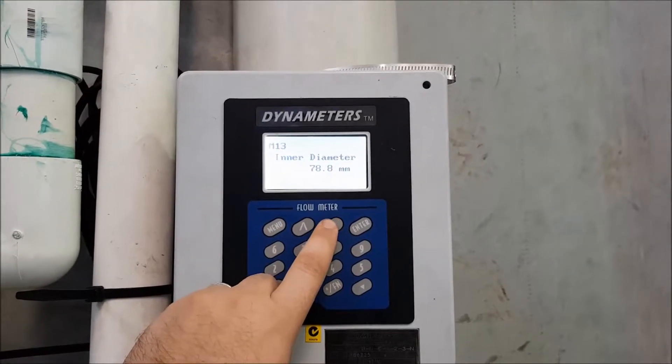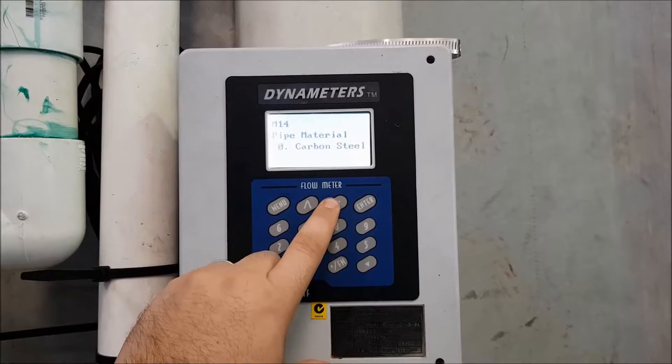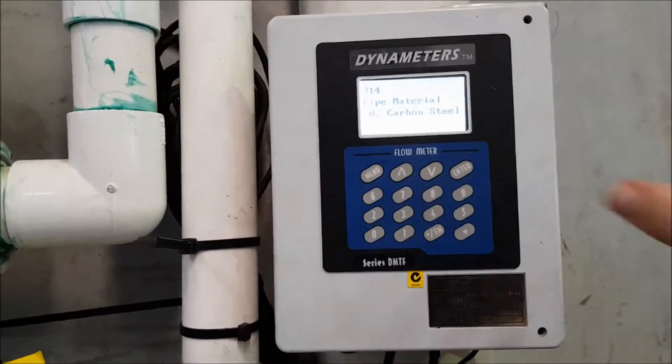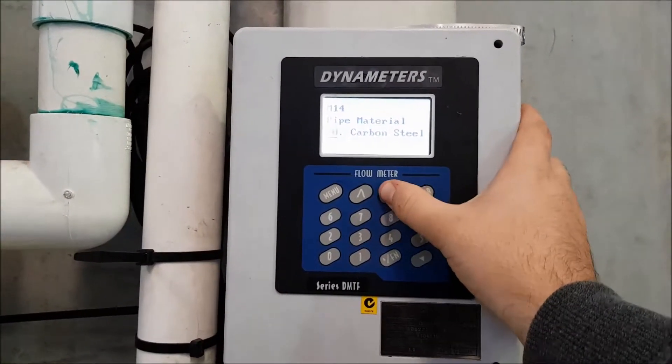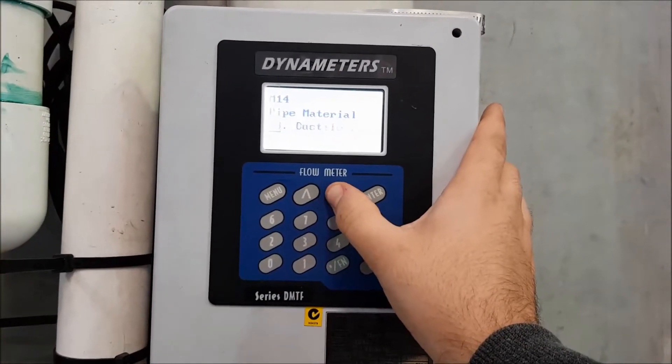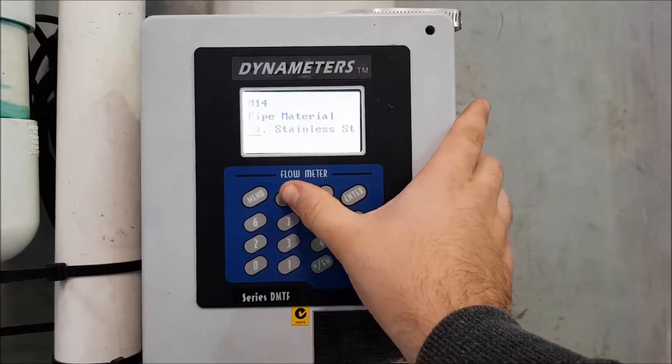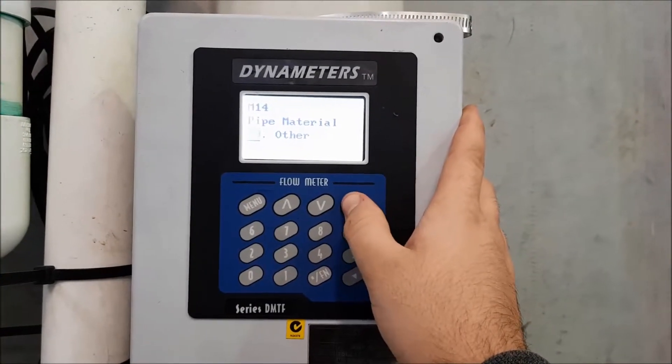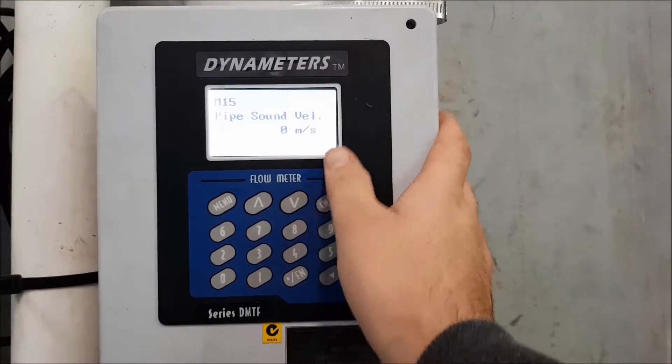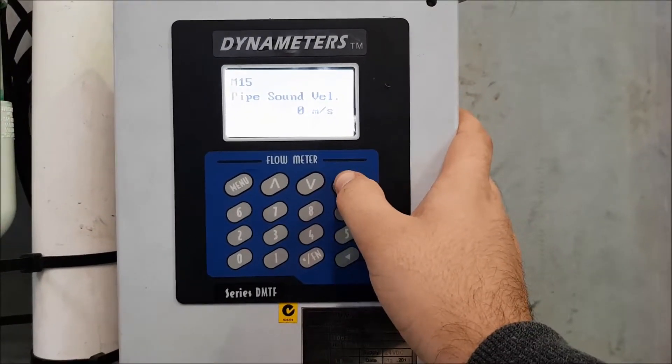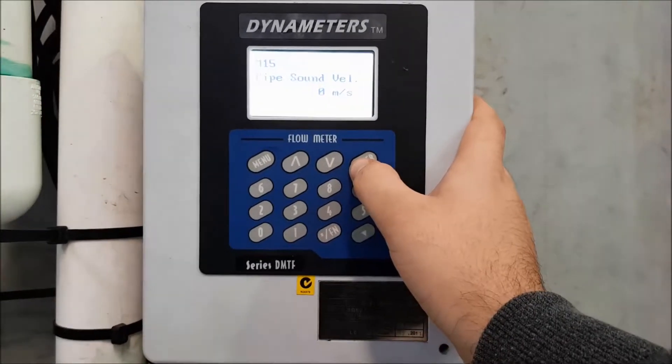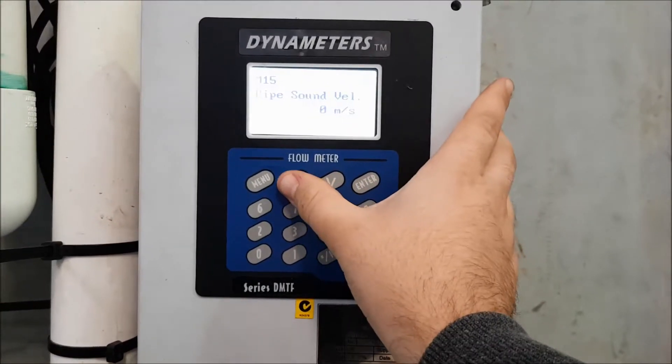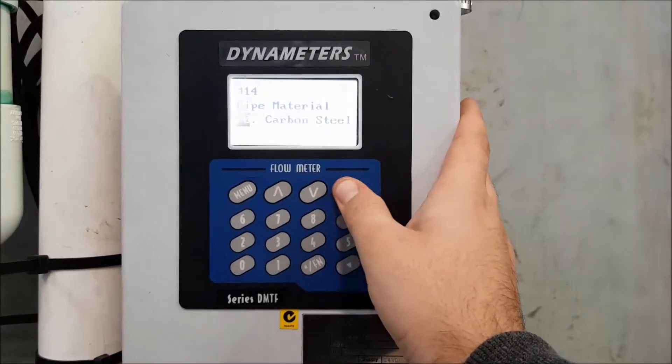The inner diameter is calculated from those two previous values entered. Now your pipe material, in this case, I have a carbon steel pipe. But you can change this, press enter and you can scroll through pre-programmed materials. Or if your one's not in that list, just select other. And you'll see on menu 15, you can manually type the sound speed of your material, which you can usually find online or you might know it. But in this case, I'm going to select carbon steel.